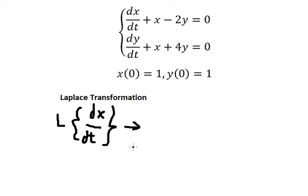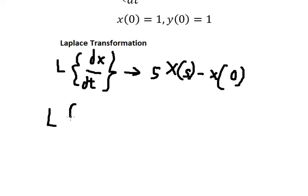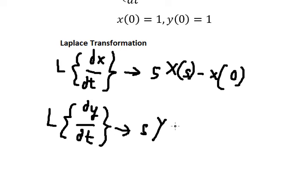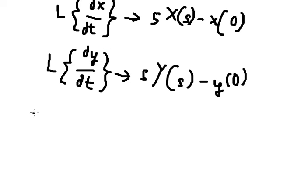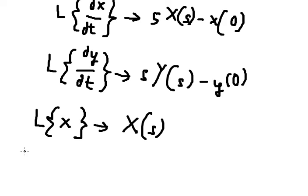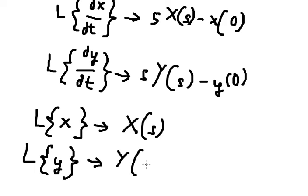The first formula is: L{s} equals capital S(s) minus s(0). The next one, L{dy/dt} equals s·Y(s) minus y(0). Then L{s} is capital S(s), and the last one is Y(s).